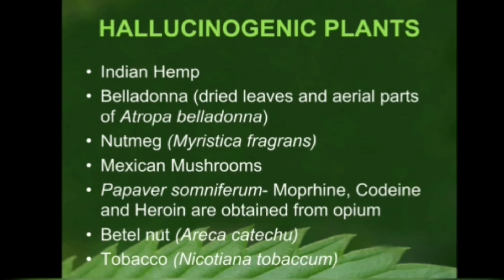Some examples of hallucinogenic plants: Indian hemp, also called the ganja plant; betel nut, Areca catechu; tobacco, Nicotiana tabacum; nutmeg, Myristica fragrans; belladonna; Mexican mushroom; and Papaver somniferum, from which poppy seeds are taken and from which morphine, codeine, and heroin are derived.